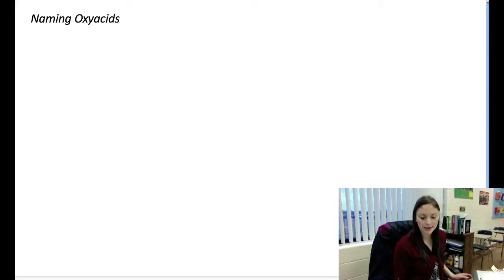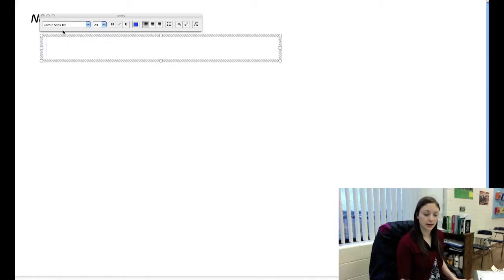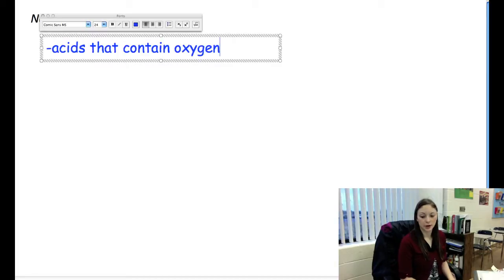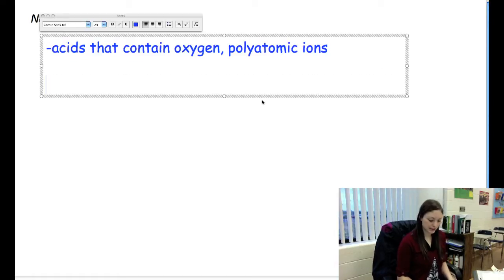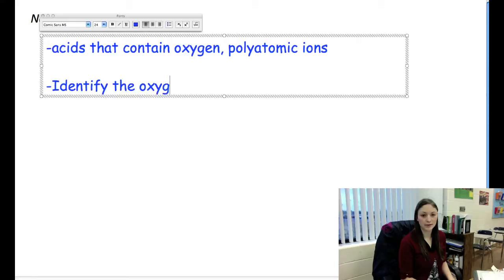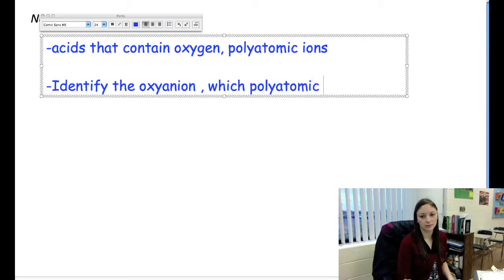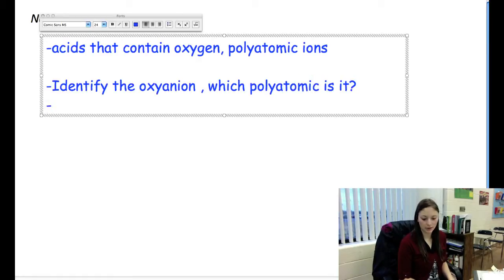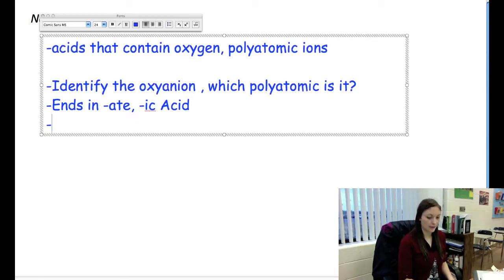Now we're going to name what's called an oxyacid. These are all acids that contain oxygen. And they're going to usually be a polyatomic ion. The first thing you've got to do when you name these is identify the oxyanion. Which polyatomic is it? When you've found out which one it is, if it ends in -ate, it gets changed to -ic acid. If that particular oxyanion ends in -ite, it gets changed to -ous acid.